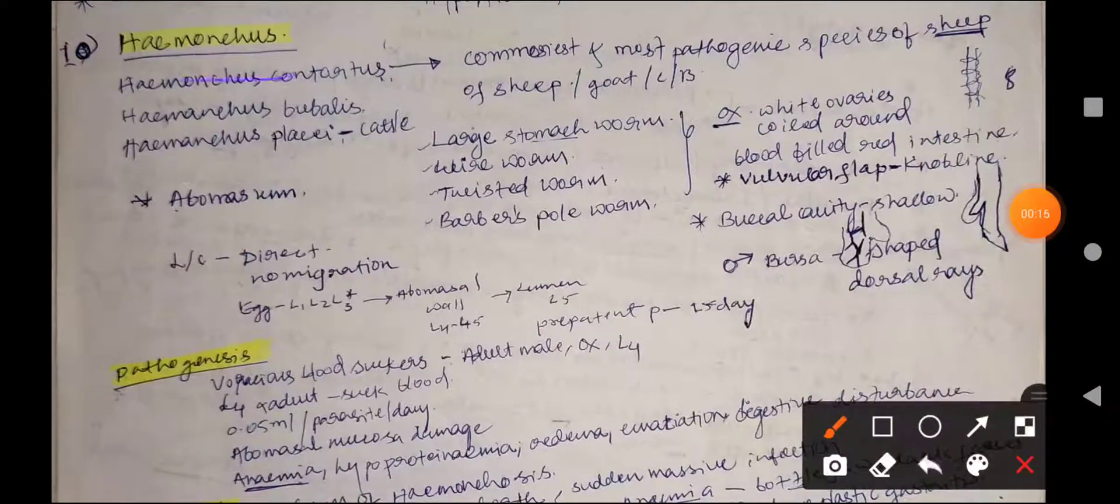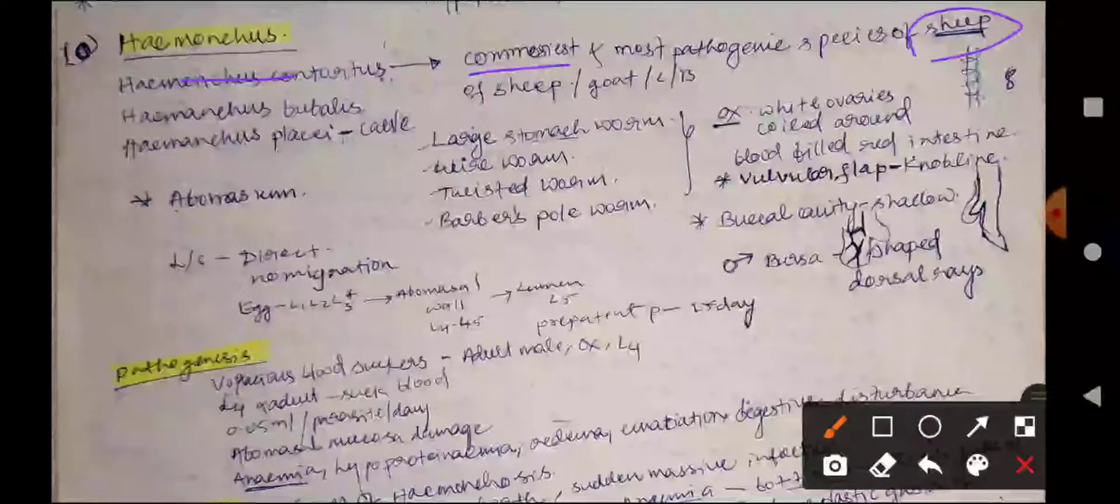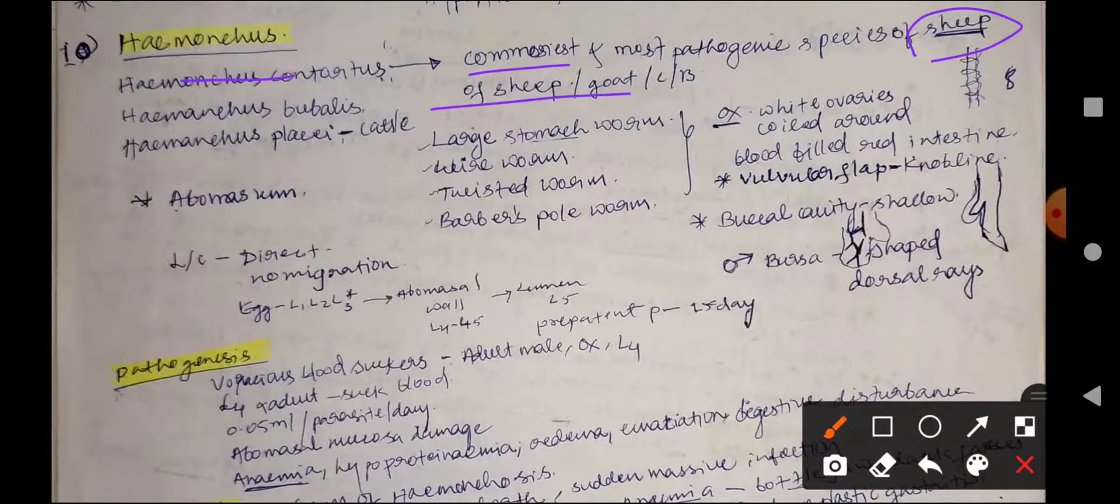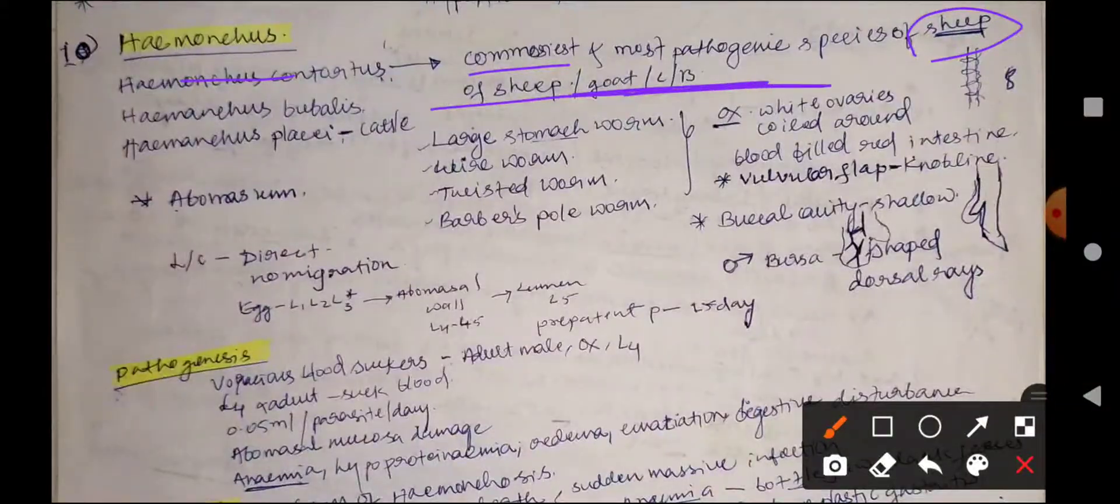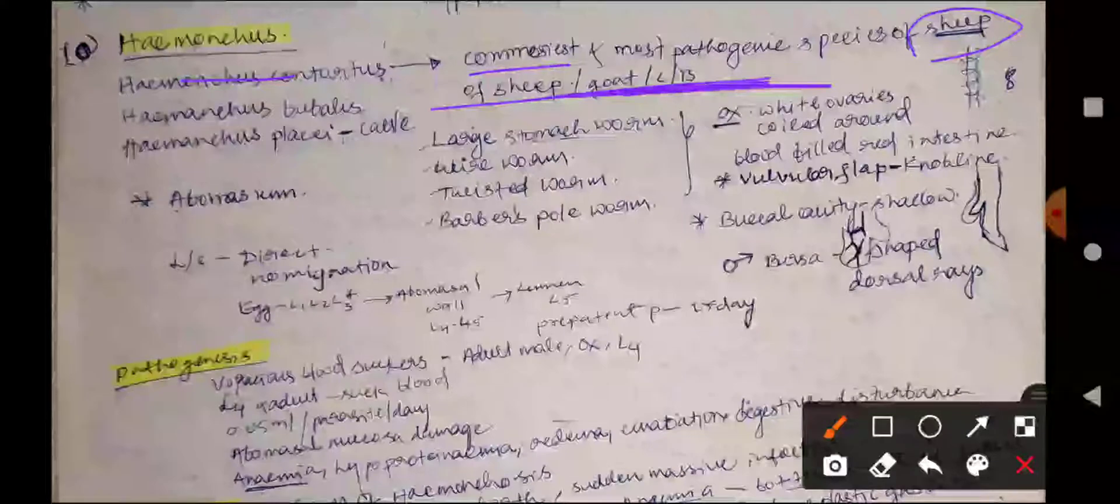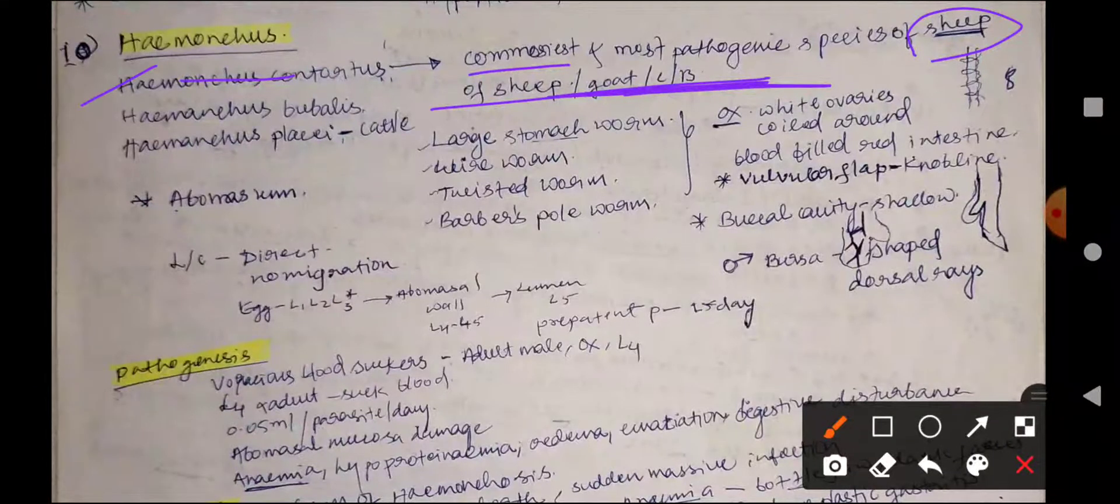Haemonchus contortus is the commonest and most pathogenic species of sheep. Their host range includes sheep, goat, cattle, and buffalo for all species of the genus Haemonchus, which include Haemonchus contortus, Haemonchus bubalis, and Haemonchus placei.